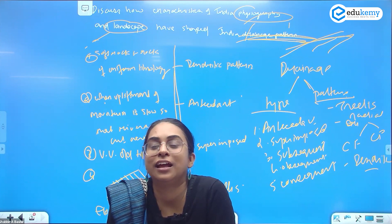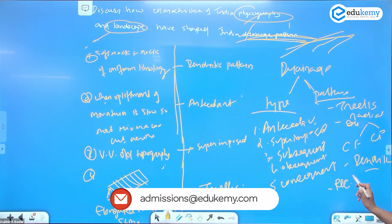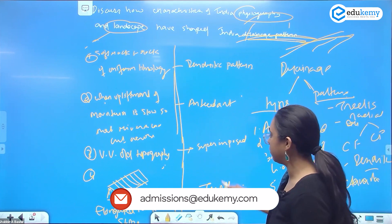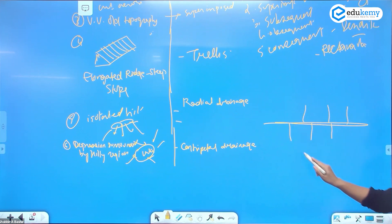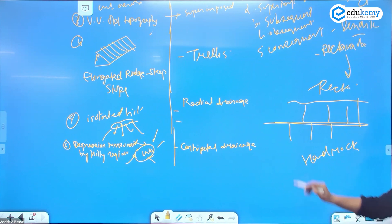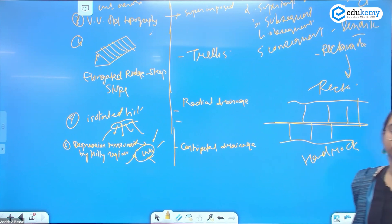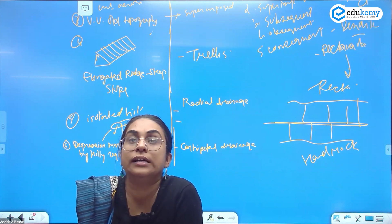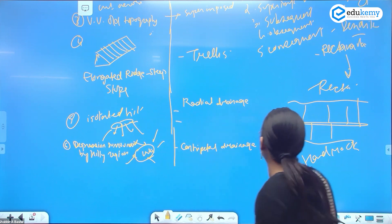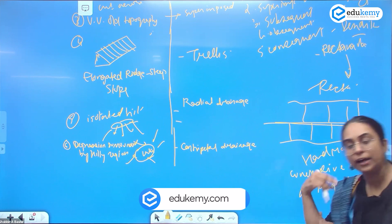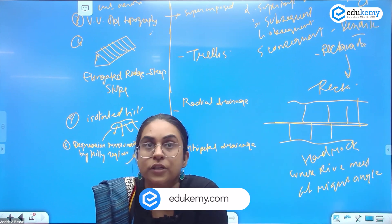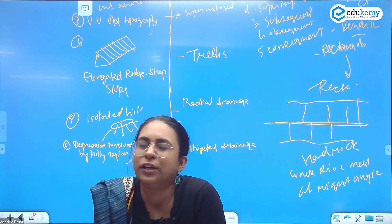There is no grid pattern — you have rectangular pattern. What happens is if this is the main river, and it is joined by several tributaries at right angles, this occurs in hard rock areas. In hard rock, rivers are forced to follow joints and fractures, meeting at right angles — that gives you rectangular pattern. Hard rocks where the rivers meet at right angles give rectangular pattern.